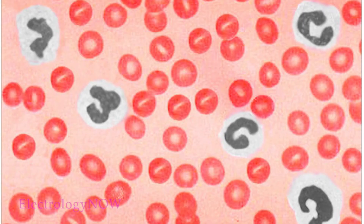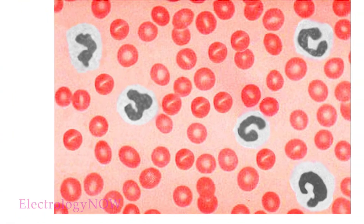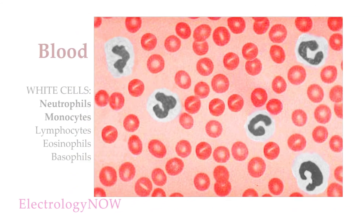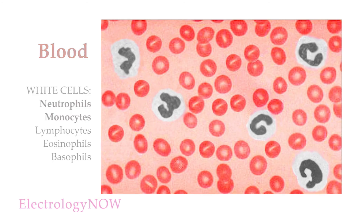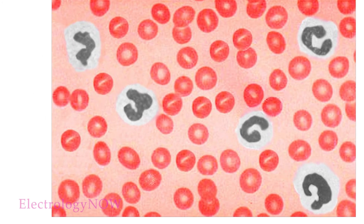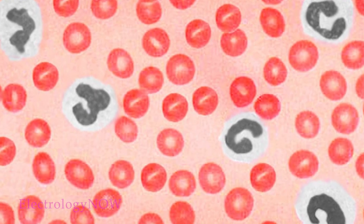Here's a photo of red and white blood cells in the blood. As you can see, there are many different types of white cells, and each one has a specific function. All these white cells are part of your immune system — they all fight off infections. In wound healing, the neutrophils and monocytes, which are both white cells, play a major role.